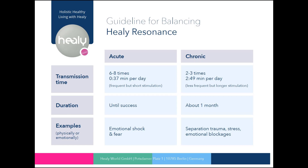Let us now proceed to the guideline for balancing. Lists pertaining to acute topics are usually sent more frequently but for a shorter period of time. Therefore, they should be sent about six to eight times a day for a short transmission period of 37 seconds. The total transmission time depends on the success. Only after you have successfully balanced an issue should you create a new list and activate it again according to the guideline for balancing.